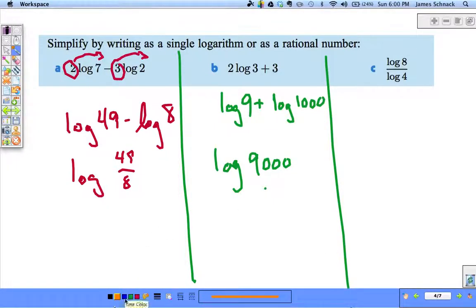Last one. Log base 10 of 8, divided by log base 10 of 4. Let's just cross off the logs, right? Wrong. Can't do that. Remember, this is 10 to some power equals 8. And this is 10 to some power equals 4. Do those come out nicely? I'm thinking no.